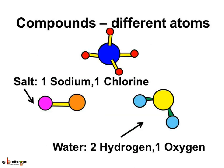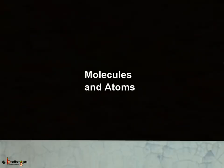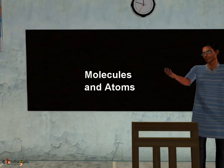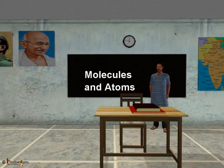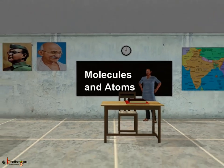Molecules which are made up of different kinds of atoms are called compounds. Water, carbon dioxide, sugar, salt, and petrol are examples of compounds. This is all for today. Bye-bye children.